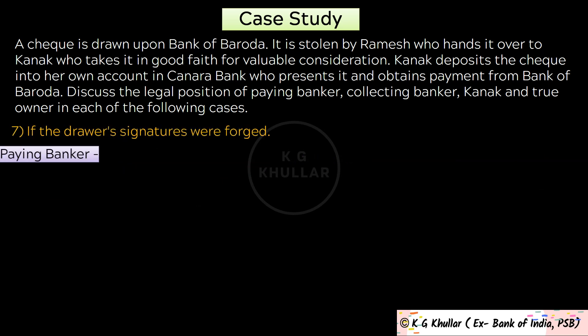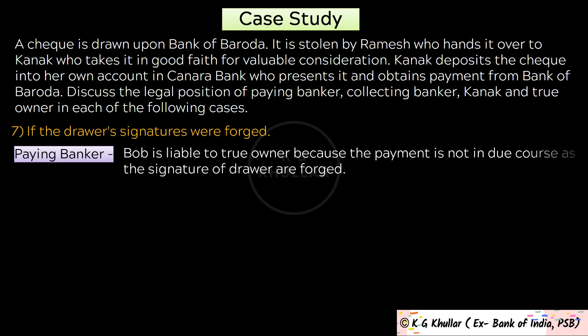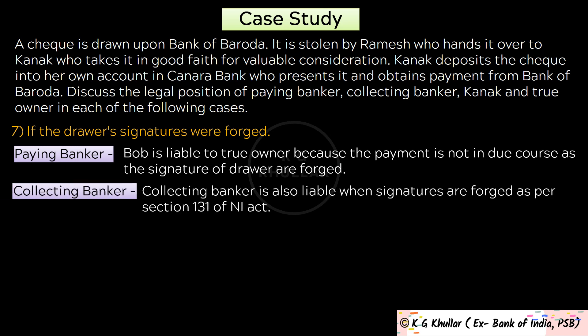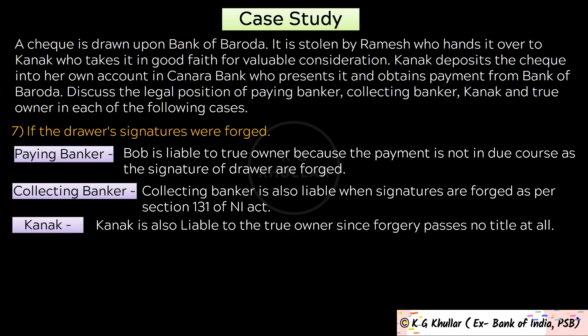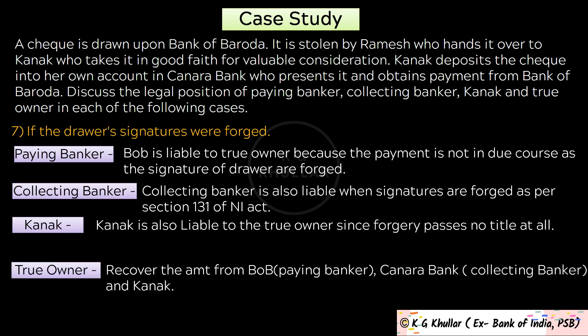Finally, what if the drawer's signatures were forged? If the signature of the drawer, the person who made the cheque, is itself forged, then the paying banker, Bank of Baroda, is liable to the true owner because the payment is not in due course. Similarly, the collecting banker is also liable when signatures are forged as per section 131 of the Negotiable Instruments Act. Kanak is also liable to the true owner since forgery passes no title at all. The true owner can recover the amount from Bank of Baroda, Canara Bank, and Kanak.